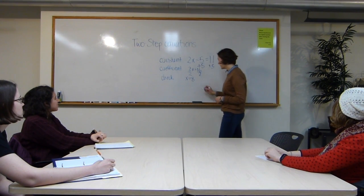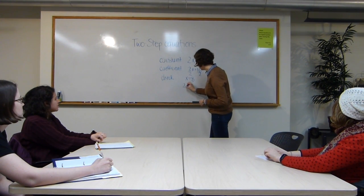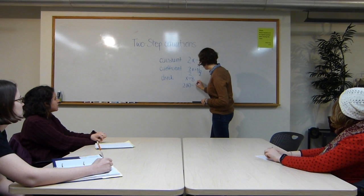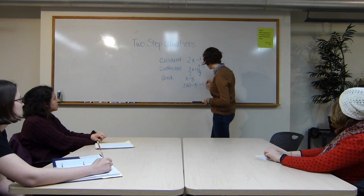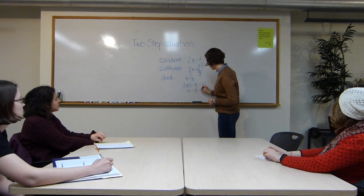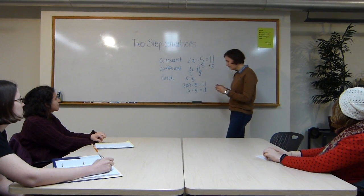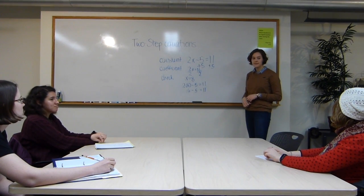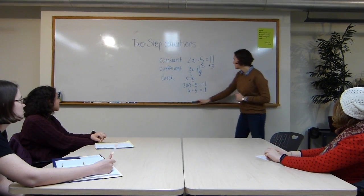And we check this the same way as we did last time. So 2 times 8 minus 5 equals 11. And 2 times 8 is equal to 16 minus 5 equals 11. Any questions on that process? Super.